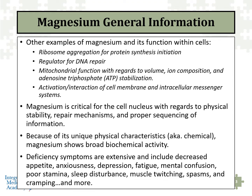Magnesium is also involved in the intracellular messaging system — how cells work internally and communicate with other cells. It turns out magnesium is critical for stability, repair mechanisms, and proper sequencing of information. Because of its unique physical and chemical characteristics, it has a broad range of biochemical activity.